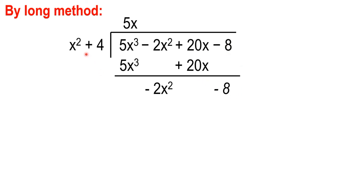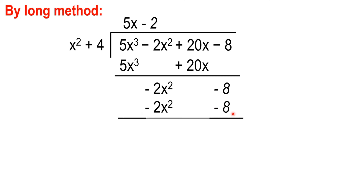Negative 2x squared divided by x squared is negative 2. Negative 2 times x squared is negative 2x squared. Negative 2 times 4 is negative 8. And I have no remainder. So, that's how you do the long method division. I hope you have learned a lot from here.